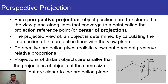In parallel projection, the projection lines are parallel, while in perspective projection the projection lines converge at a point called the projection reference point or center of projection. Object positions are transformed to the view plane along lines that converge to this point. In the figure, we have a line with dimensions p1 and p2, and the dashed lines are the projection lines intersecting at the view plane — those intersection points define the new coordinates of the object.